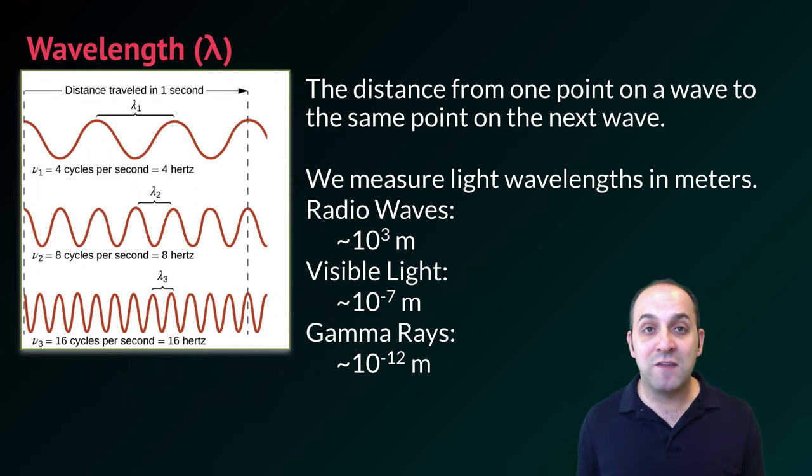Wavelength is defined as the distance from one point on a wave to the same point on the next wave. Electromagnetic waves have a huge variety of wavelengths. Radio waves can have wavelengths that are many thousands of meters long and things like gamma rays have wavelengths that are trillionths of a meter long. So we go from the incredibly tiny wavelengths up to the incredibly large wavelengths. If you remember, visible light has wavelengths that are on the order of hundreds of nanometers in length or 10 to the negative 7 meters.